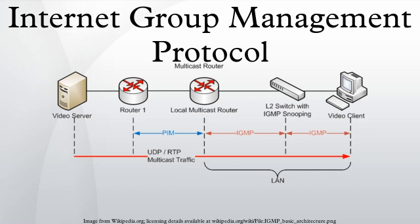IGMPv2 improves over IGMPv1 by adding the ability for a host to signal desire to leave a multicast group. IGMPv3 improves over IGMPv2 mainly by supporting source-specific multicast.